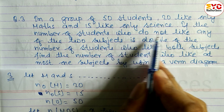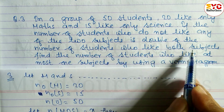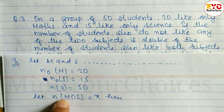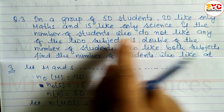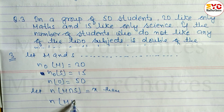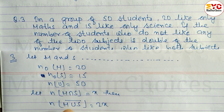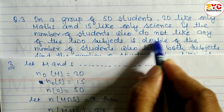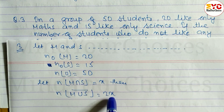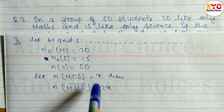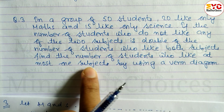The number of students who do not like any of the two subjects is double the number who like both subjects. So the number who like both is x, and the number who do not like either subject is 2x.